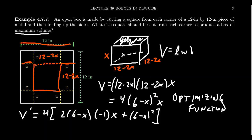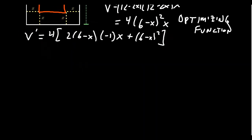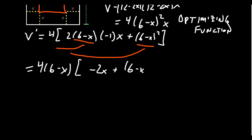Let's see, so there is a common factor of 6 minus x here and here. We're going to factor that out. So we get 4 times 6 minus x, and then what's left behind is a negative 2x plus 6 minus x, like so.